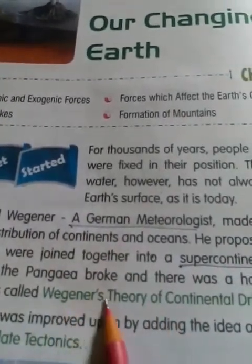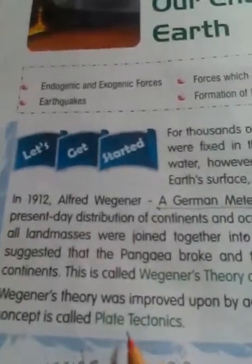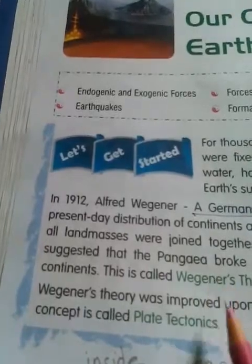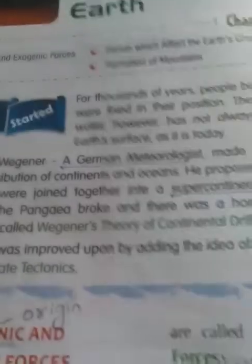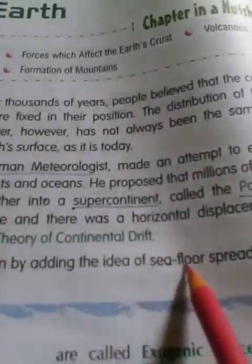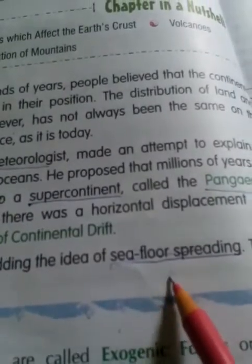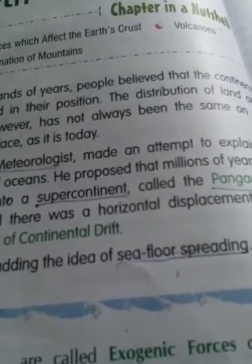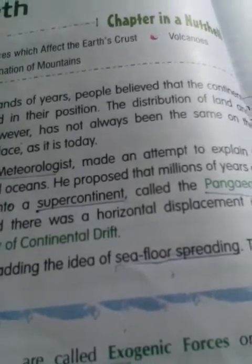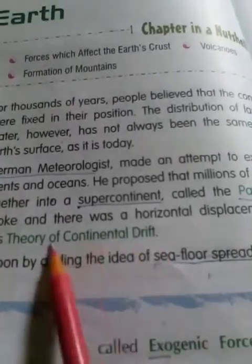Wegener's theory is known as the Theory of Continental Drift. Another important theory is the Theory of Sea Floor Spreading, proposed by Harry Hess — H-A-R-R-Y H-E-S-S. These two theories — Wegener's continental drift and Harry Hess's sea floor spreading — are foundational.